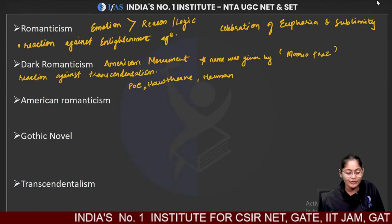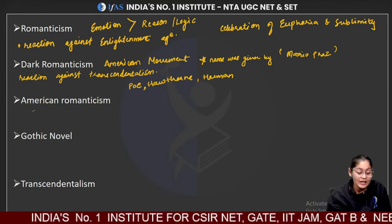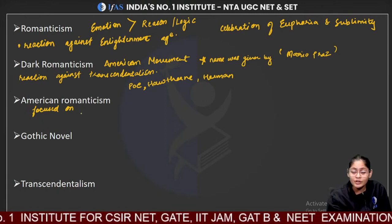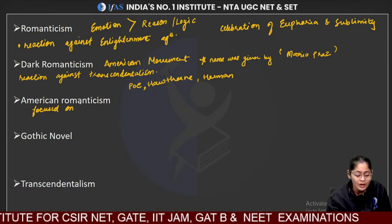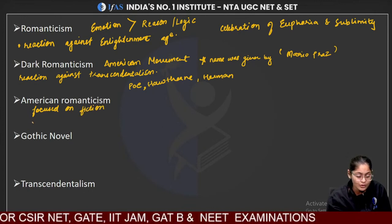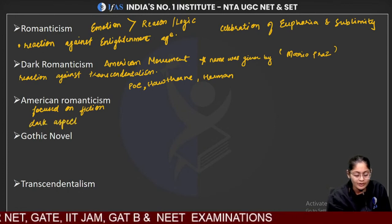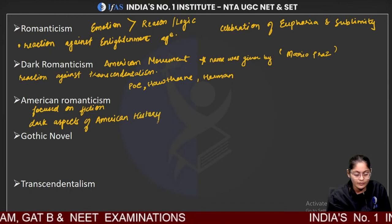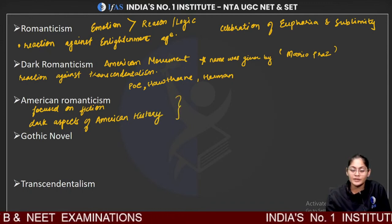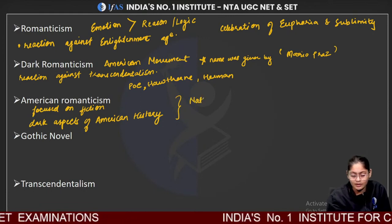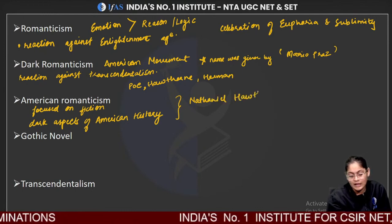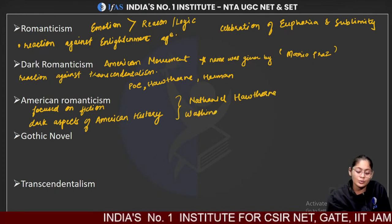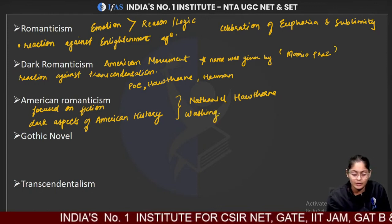American Romanticism focused on fiction and talked about the dark side of American history. Famous writers of American Romanticism include Nathaniel Hawthorne and Washington Irving, who would also be counted as an American Romantic writer.